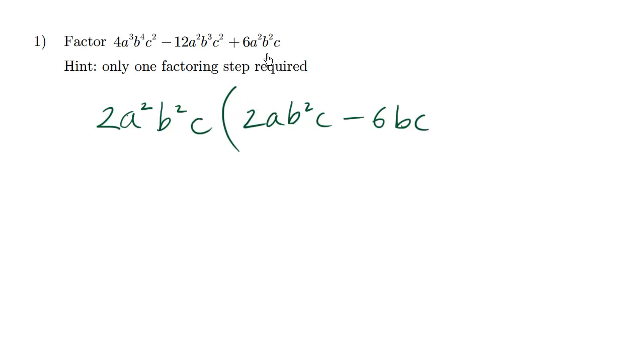Finally, let's work on the last term. 2 times what is positive 6? 2 times 3 is 6. A squared is already there, so there's nothing to put there. B squared times what is B squared? It's 1, so we'll leave that alone. And C times what is C? C times 1 is C. So there's no reason to write times 1 here, because anything times 1 is itself. We'll just leave it like that.